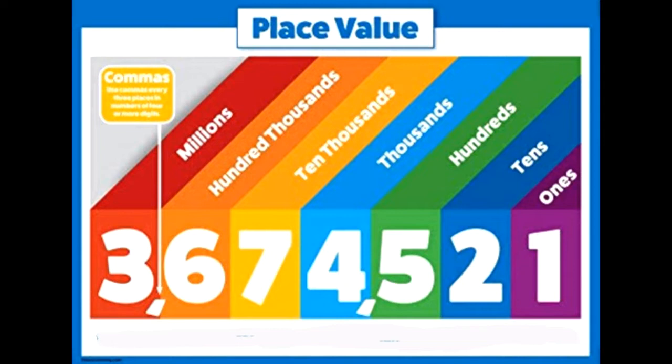Can you read this 7-digit number? It's quite simple. We would say 3,674,521. This is the place value of each digit in a 7-digit number.